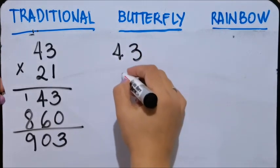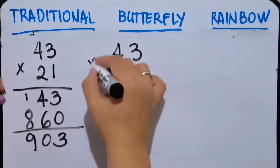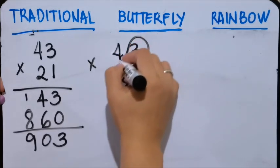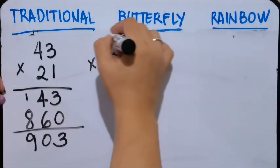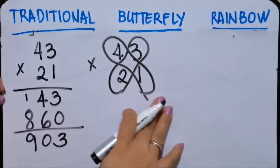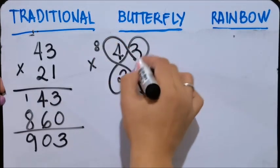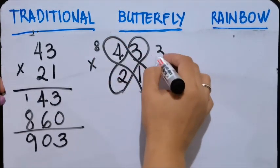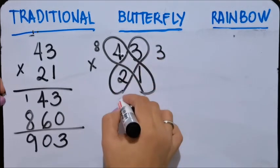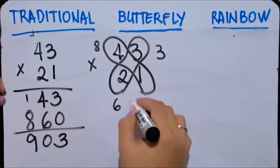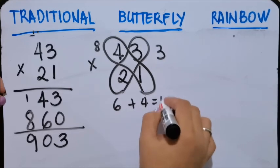The butterfly technique. 43, 21. So let's draw a butterfly. Okay, so this one is 8, this one is 3.